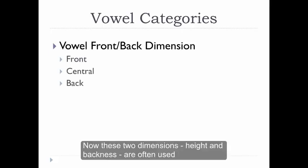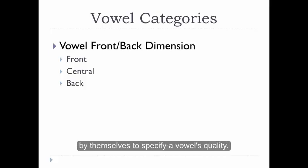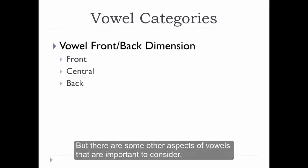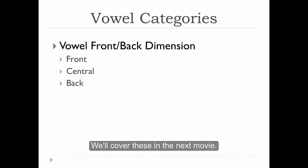Now these two dimensions, height and backness, are often used by themselves to specify a vowel's quality. But there are some other aspects of vowels that are important to consider. We'll cover these in the next movie.